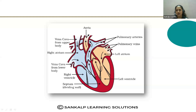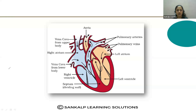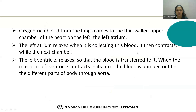Many students ask whether deoxygenated blood is actually blue in color. No — the blue color is just a visual representation to help understand the concept. Oxygenated blood is shown in red and deoxygenated blood in blue for clarity, but blood is always red in color. That is what double circulation means.